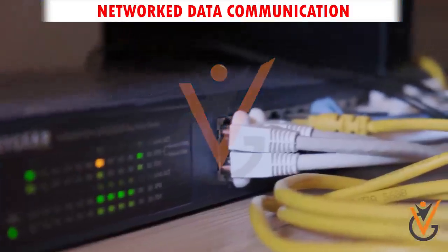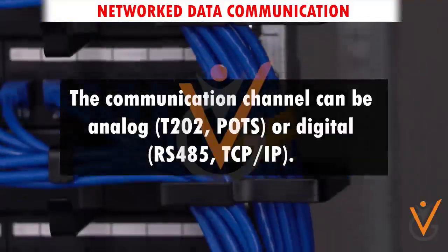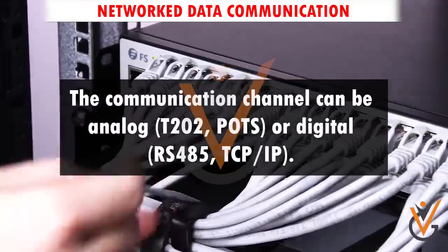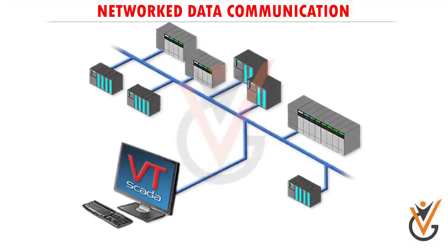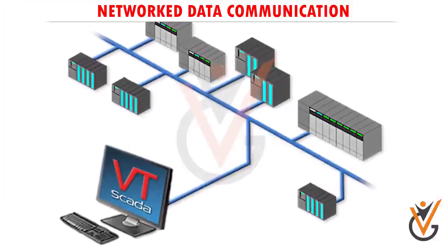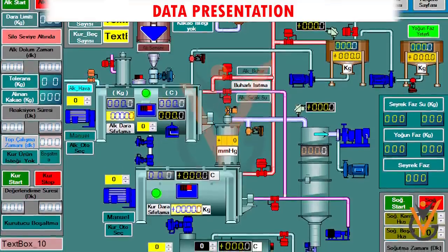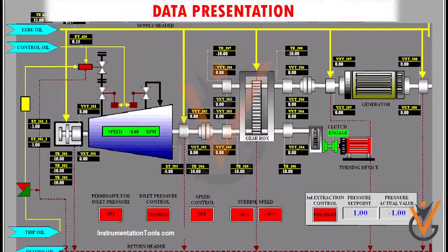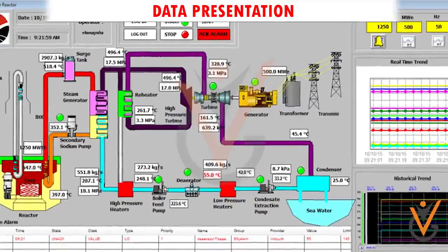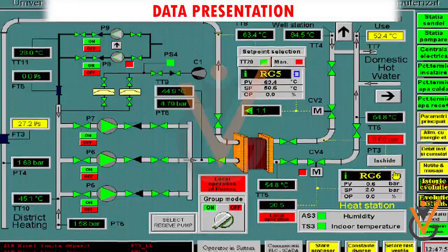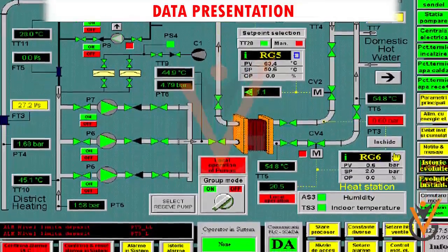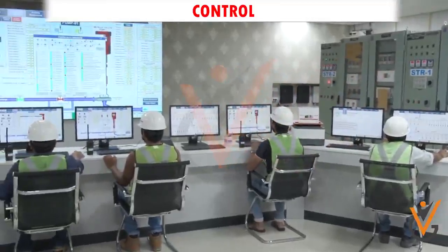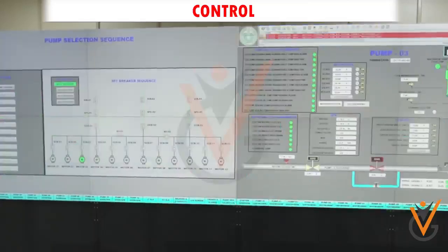Networked data communication: the collected data is transmitted either spontaneously or in response to a request to some kind of upstream consolidator or master. The communication channel can be analog T202 ports or digital RS485 TCP/IP. SCADA network topology also includes transport validation independent of content validation. Data presentation: the collected data is processed, organized, and presented for system operators to make appropriate response and control decisions. Presentation can vary from tabular logs to graphical mapping or image backgrounds.